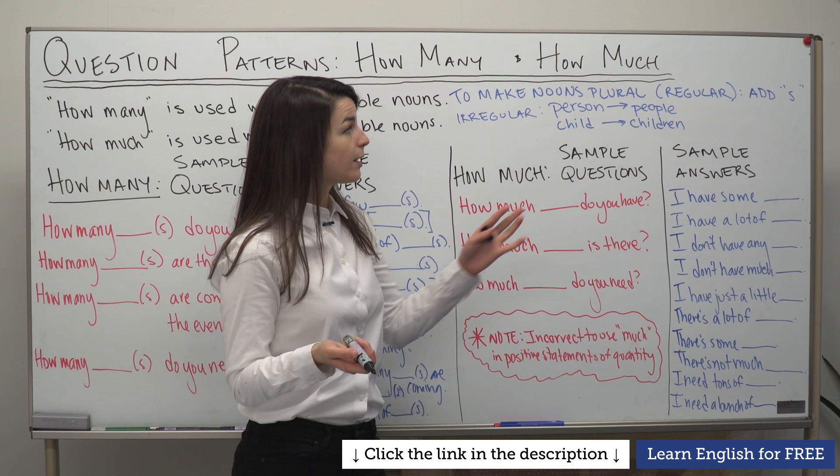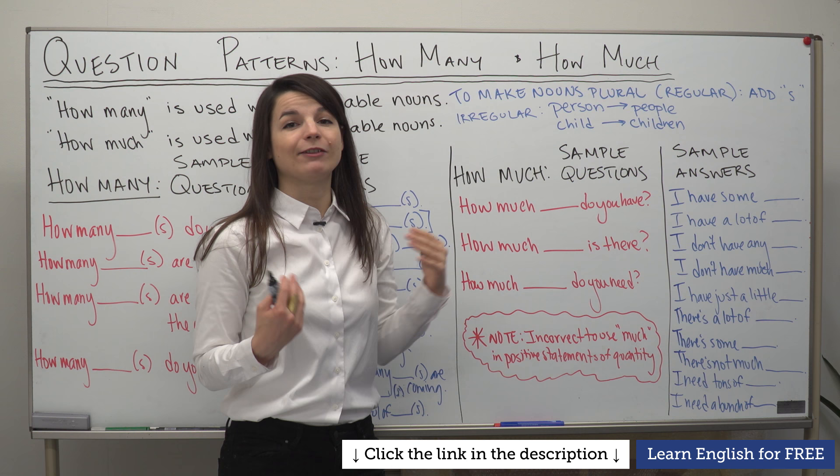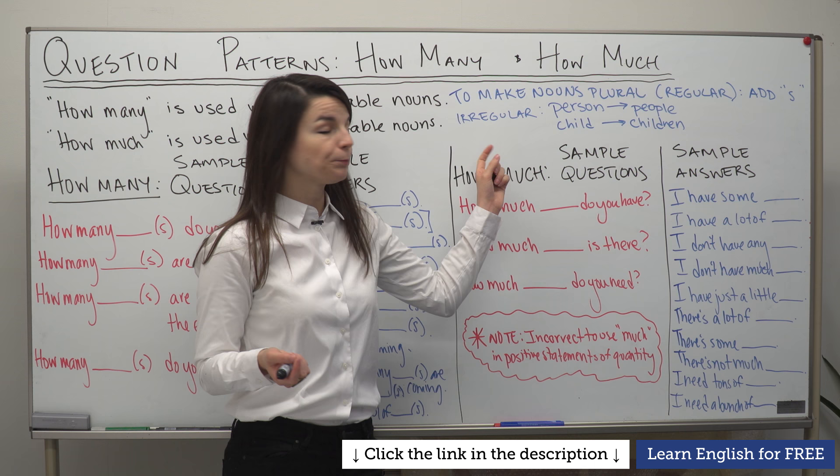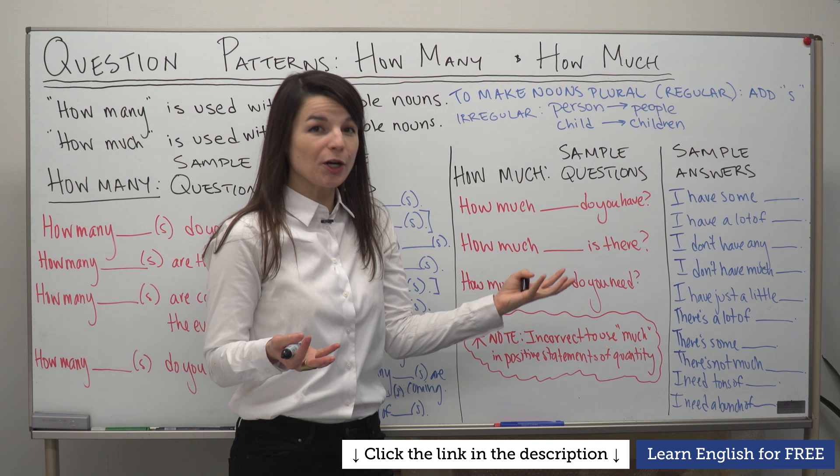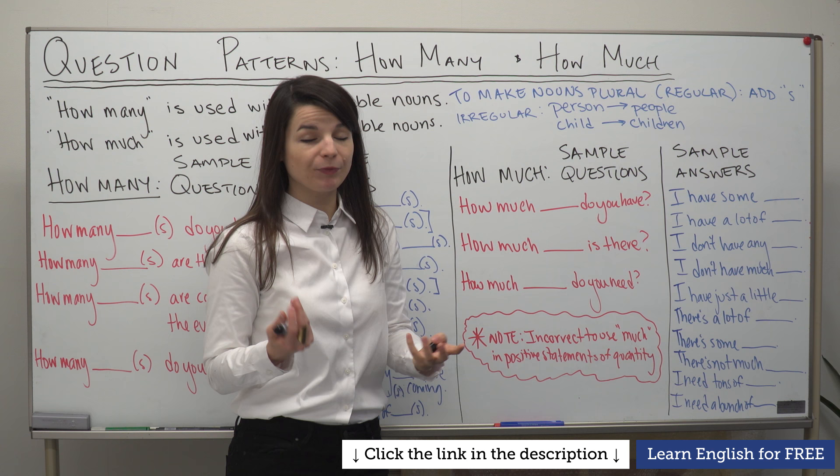However, there are some nouns that have an irregular plural form. Two that I want to focus on today: 'person' — when we count person, we say one person, but the plural form is 'people'. So one person, two, three, four people. This is an example of an irregular countable noun.